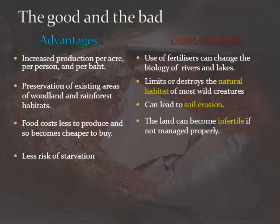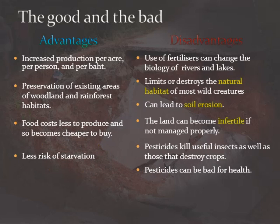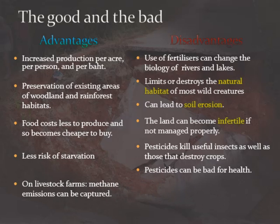There's certainly a lower risk of starvation if there is food that is cheaper to buy, but pesticides can kill useful insects as well as those that destroy crops. Pesticides also have an unknown effect on human health, although as we saw recently they have become extremely dangerous to bees.